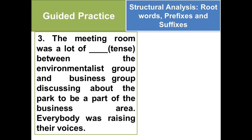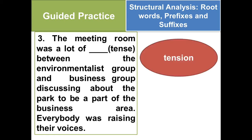Number 3: The meeting room had a lot of blanks between the environmentalist group and business group, discussing about the park to be part of the business area. Everybody was raising their voices. Was your answer tension? That's correct. I will give you two claps. The answer is tension. Add suffix 'shon' to the root word tense. The sentence shows the two groups cannot relax to understand each other, which can cause conflict.